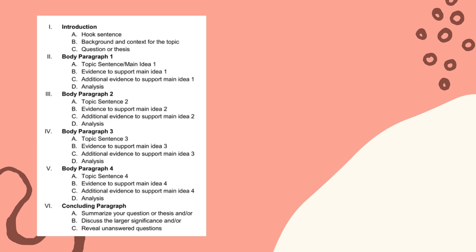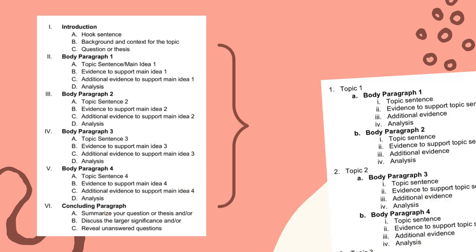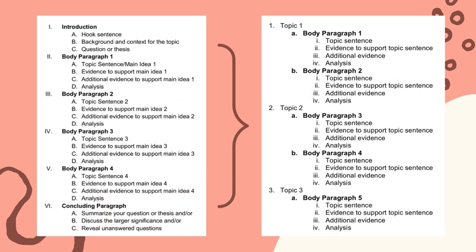This is a template for what an outline will look like for an expository paper. Another way to think about it would be to separate the essay into sections depending on their subtopics rather than each paragraph having a different topic. If you need to cover an area in more depth than another, this could be a good alternative.